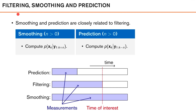There are two problems related to filtering: smoothing and prediction. The objective of all three is to compute a probability density function of state xk, but they differ in how much data we condition on. Let n be a positive integer greater than zero. In the smoothing problem, we compute the distribution of xk using measurements from 1 to k+n — that is, using future data to estimate the state at time k. In the prediction case, we compute the distribution of xk using data from 1 to k−n — making predictions of the state before the measurements arrive.